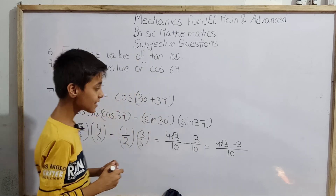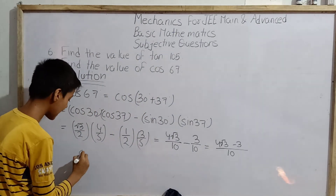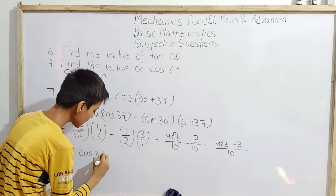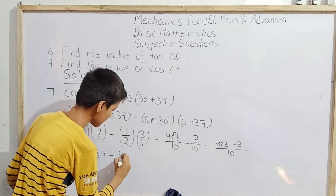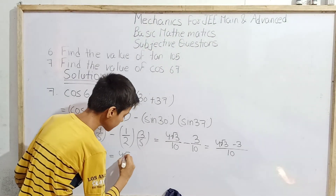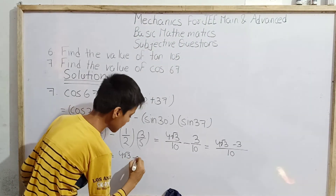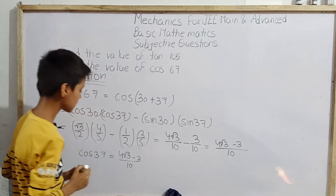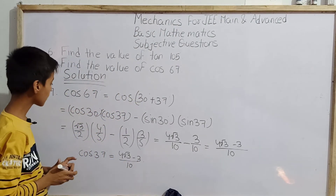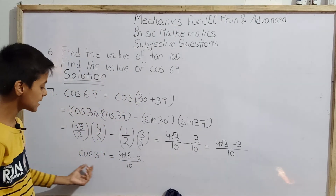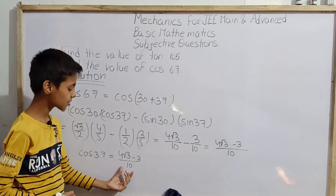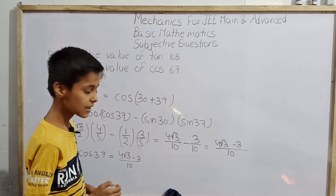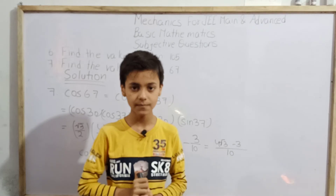So finally, cos 67° equals (4 root 3 − 3) / 10. This is the final answer for question 7. That was today's topic — thank you.